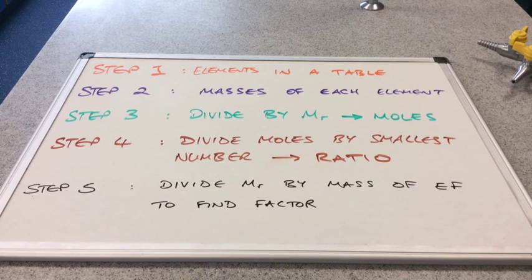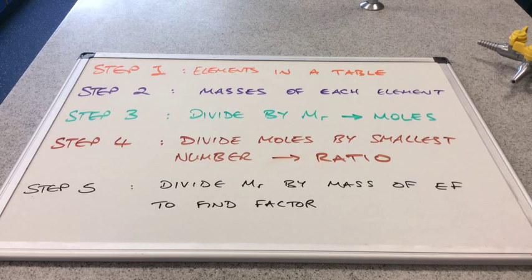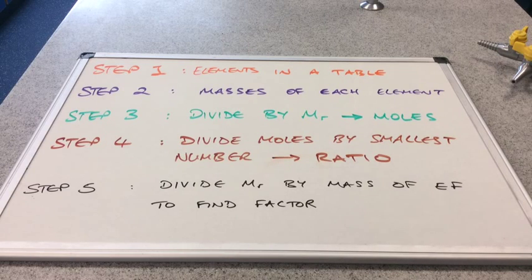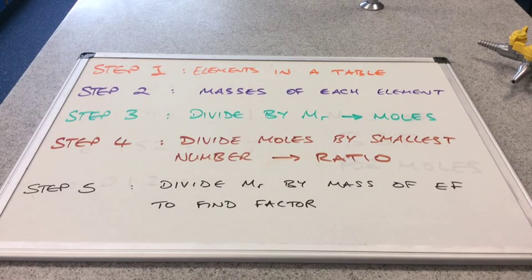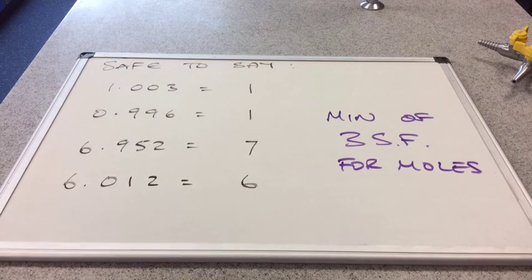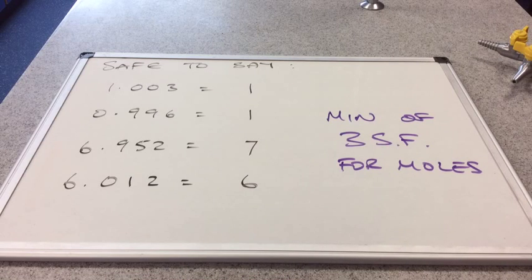You can see I've included a fifth step there. And that's in case you're asked to find the molecular formula. So remember what we did? We divided the MR given by the mass of the empirical formula. And that gives us the factor that we need to multiply by to get the molecular formula. Sometimes you'll find that the mass of the empirical formula is the MR, in which case you don't need to do anything. That means that the empirical formula and the molecular formula are the same. So like I said, I've been using this method now for 30 years and it's never let me down. And just a final reminder about rounding. So it's safe to say that those numbers are rounded to these numbers. And also just remember to give at least three significant figures when you work out your moles.